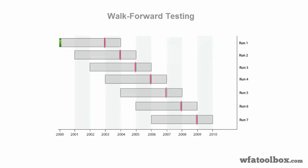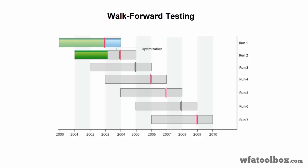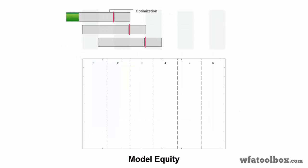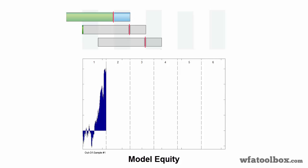That's why we use walk-forward testing. This method divides historical data of some asset into several stages, which are then each divided into in-sample and out-of-sample periods. After carrying out the same back-testing mentioned above, we find that the results of system trading for the out-of-sample periods of all stages, combined into one line, show us the most realistic effectiveness of our trading system.